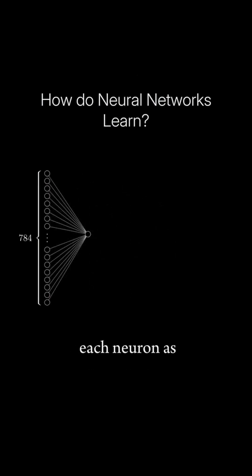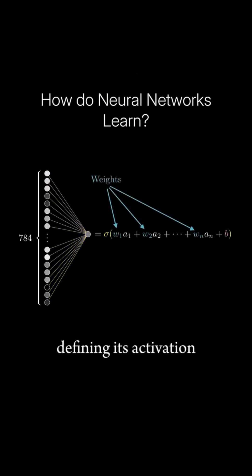Conceptually, we're thinking of each neuron as being connected to all of the neurons in the previous layer, and the weights in the weighted sum defining its activation are kind of like the strengths of those connections, and the bias is some indication of whether that neuron tends to be active or inactive.